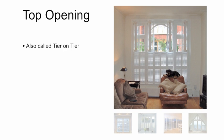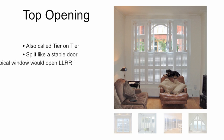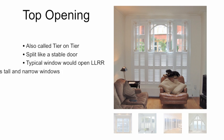The top opening design, also called tier on tier, allows the top and bottom sets of shutters to open independently from each other. They are split like a stable door, providing more flexibility for privacy and light. A typical top opening shutter would have eight shutters across the window — the top set would have two shutters folding to the left and two to the right, and the bottom set would have the same.